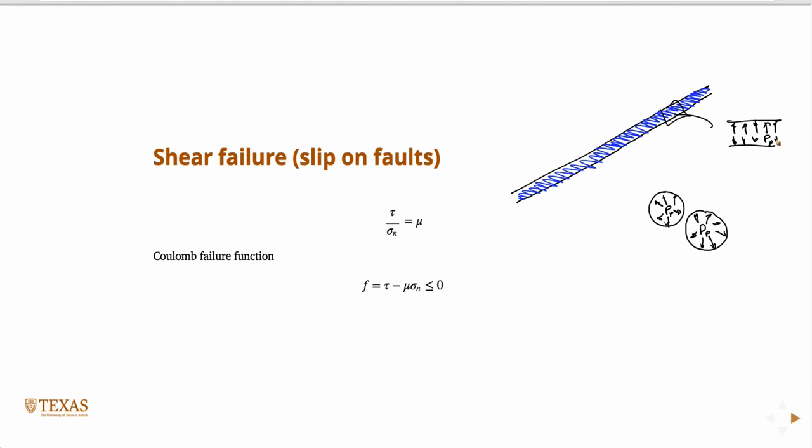But I'm going to reduce this by the amount of pore pressure. So in the face of pore pressure, this equation becomes the resolved normal stress minus the pore pressure in the denominator. If I increase the pore pressure towards the normal stress, eventually I'll exceed this value and the fault will slip.